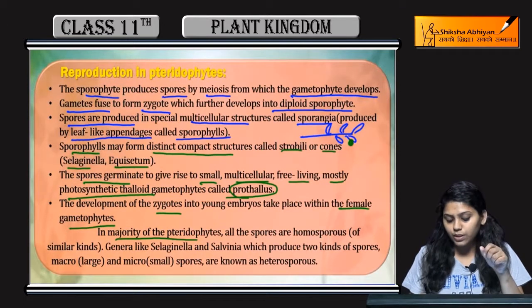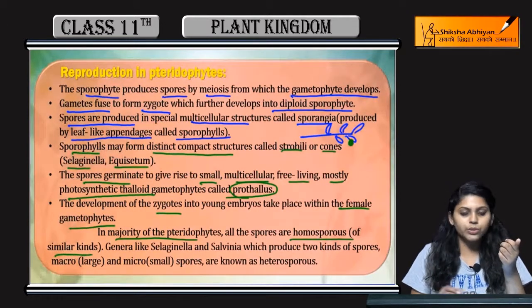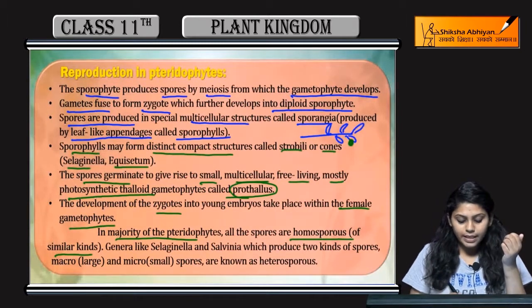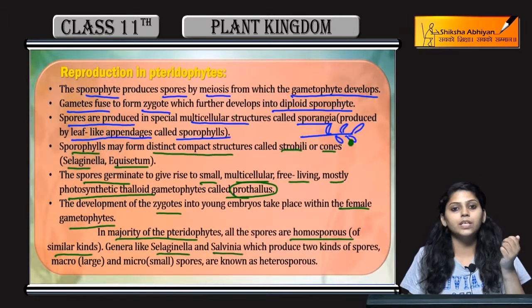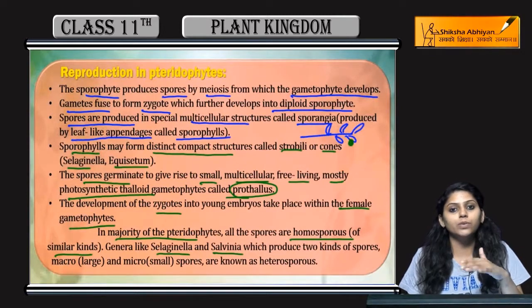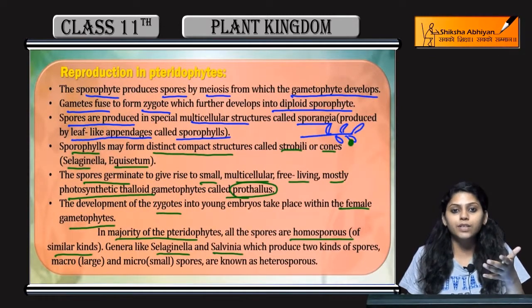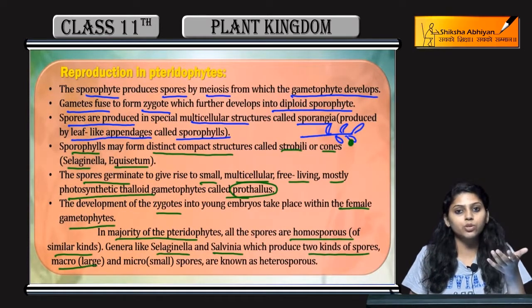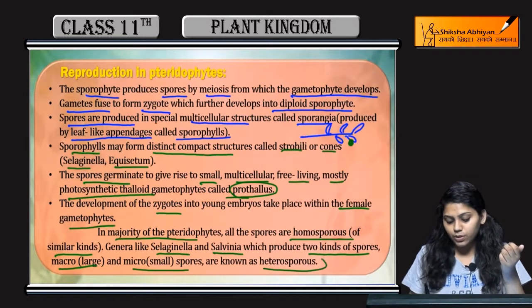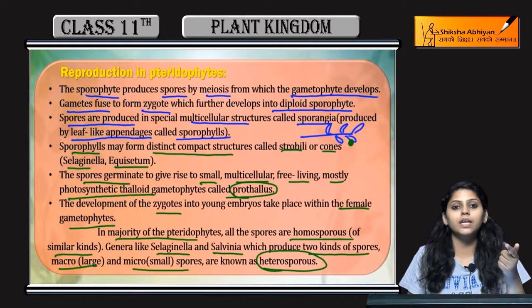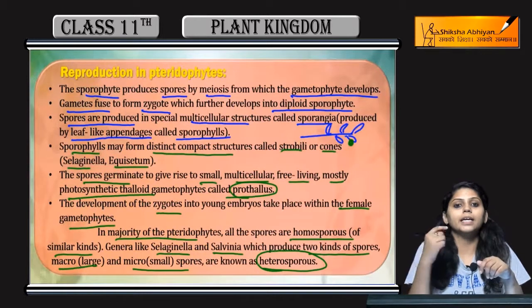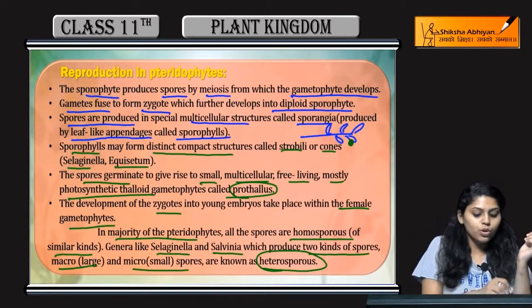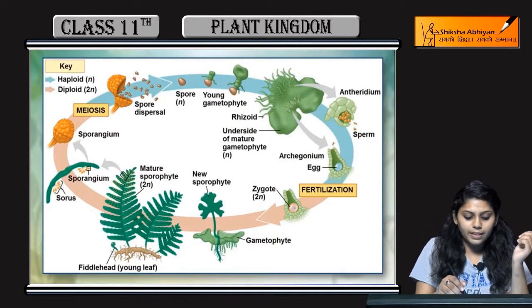The spores produced in most pteridophytes are homospores, meaning they are of a similar kind. But in Selaginella and Salvinia, heterospores are formed — they are of different kinds. Large spores are called macrospores and small spores are called microspores. If different kinds of spores are produced, they are called heterospores; if of a similar kind, they are called homospores.